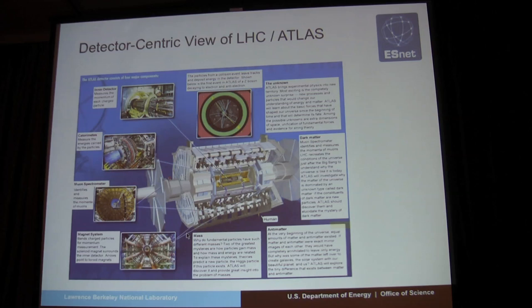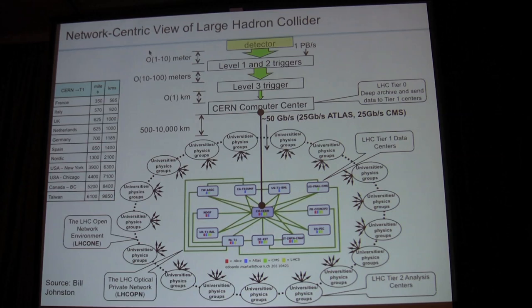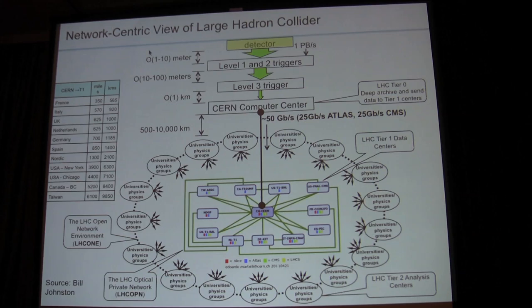In the LHC example, in high energy physics, the traditional site of discovery has been the detector — the billion-dollar, cathedral-sized instrument where collisions occur and are detected and tracked. But if we back up and look at the entire workflow from a network-centric perspective, the detector is generating petabytes per second of data, which is being reduced by trigger farms to a manageable stream of relevant data. That data is stored in a computing center at CERN, but the discovery doesn't really happen there — the data is replicated all around the world to dozens of tier-one sites and many more tier-two and tier-three sites. It's really hard to say where the discovery occurs or where the instrument ends.